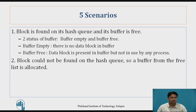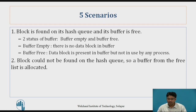The first scenario: the block is found on its hash queue and its buffer is free. Buffers have two types of status: buffer empty and buffer free. Buffer empty means there is no data block in the buffer — that particular data block is not available in the hash queue, and that empty buffer is allocated to the free list. Buffer free means the data block is present in the buffer but that buffer is not in use by any process.